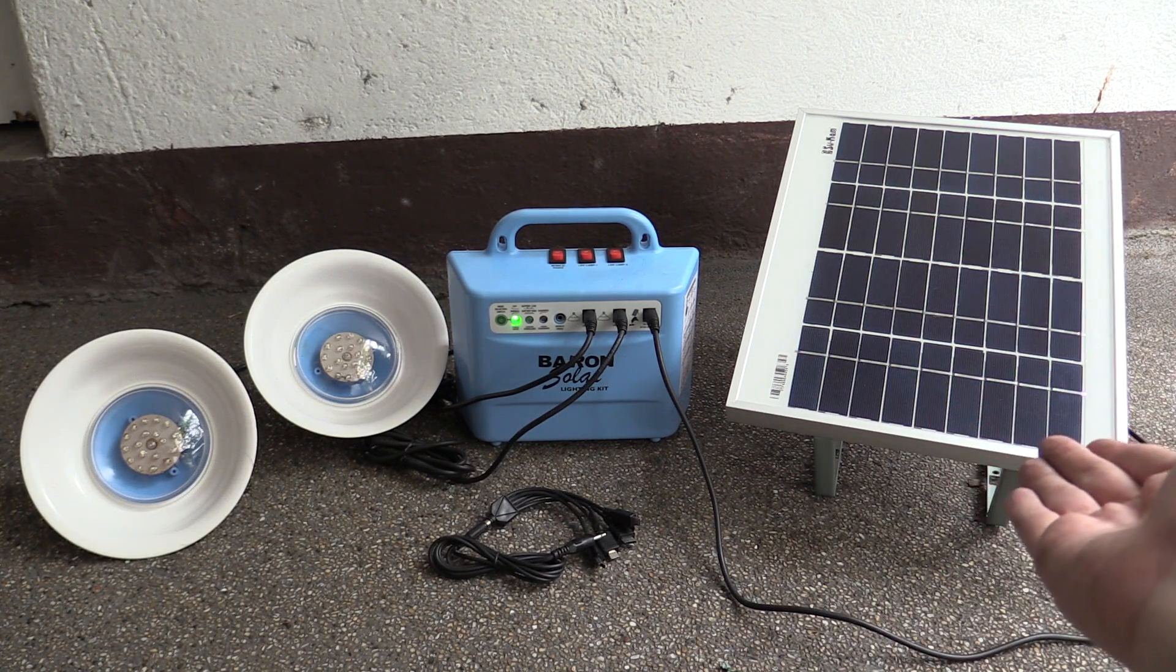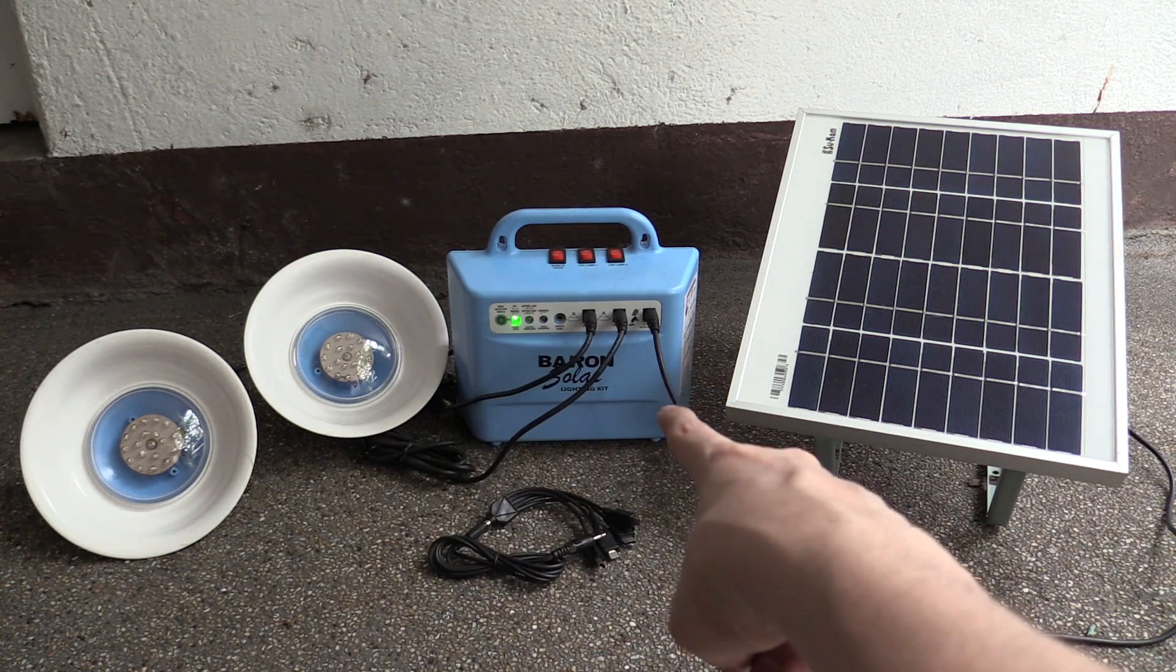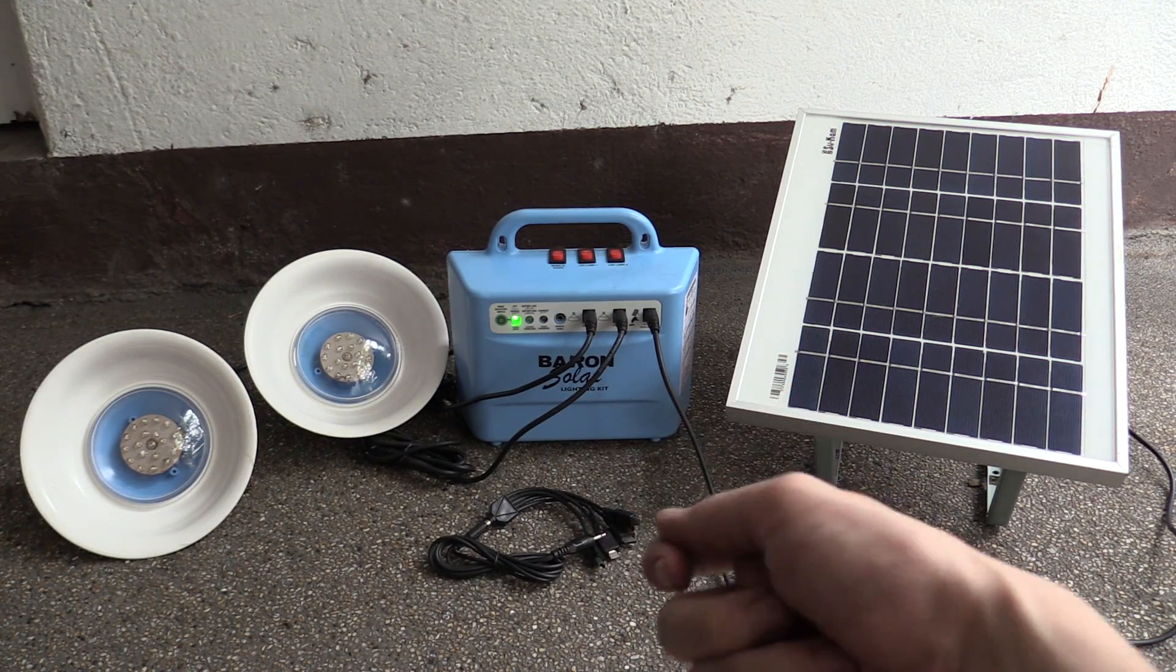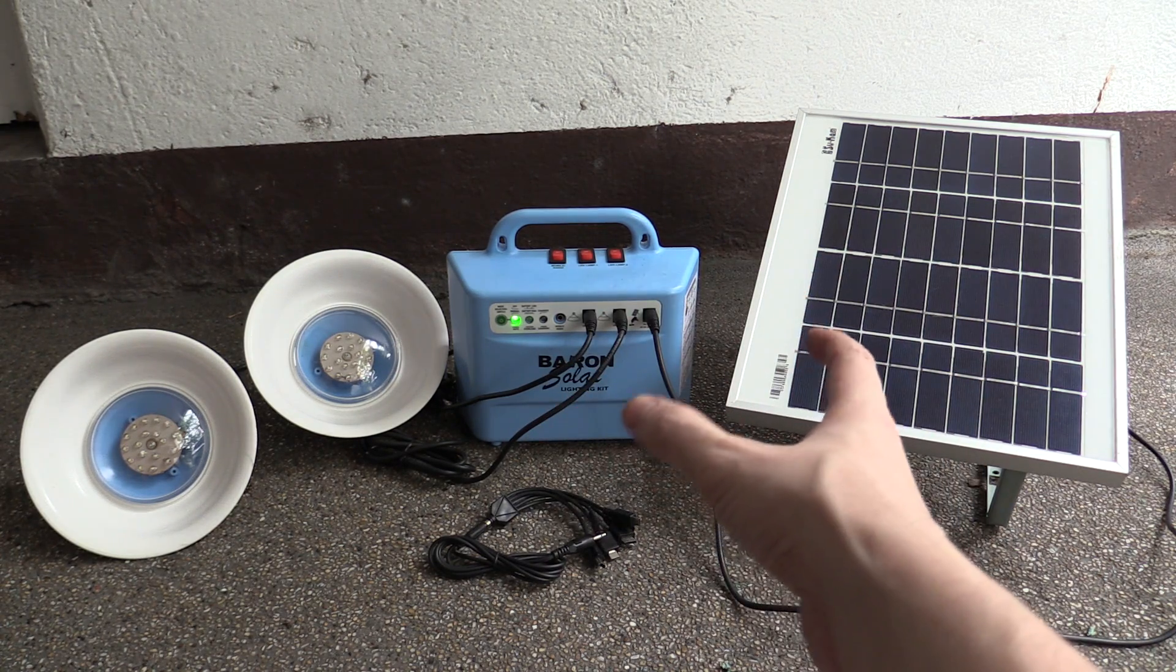We have a 10 watt solar panel, we have two LED lamps, these are 2.5 watts each, and then we have the battery and charge controller. Everything's plug and play with simple DC jack connectors. Very simple to set up, very simple to use.